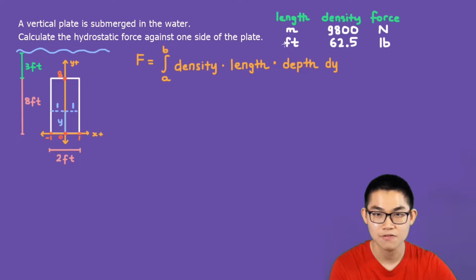Whereas if the length is in feet, then the density will be 62.5 and the force will be in pounds. So what is from a to b? Well, a is 0 and we want to calculate the force up until the very top, which is 8.